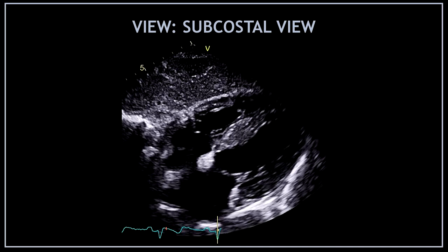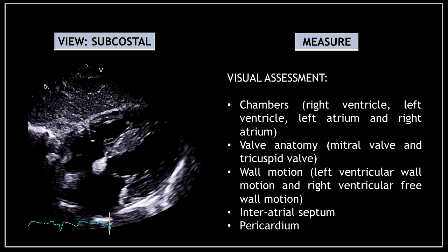This is the subcostal view, and I'm going to show you one by one all the measurements you need to obtain when analyzing this view. First, obtain a subcostal view and perform a visual assessment of the cardiac chambers: the right ventricle, left ventricle, left atrium, and right atrium. Also visually assess the mitral valve anatomy and the tricuspid valve anatomy, then assess the left ventricular wall motion and right ventricular free wall motion.